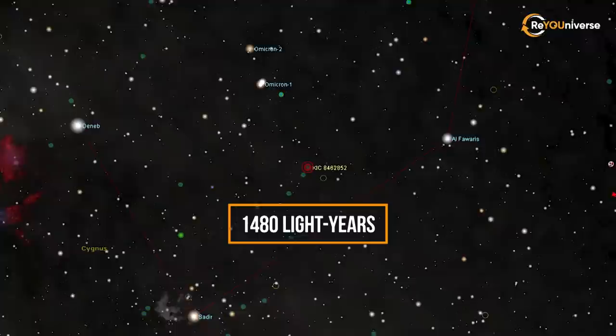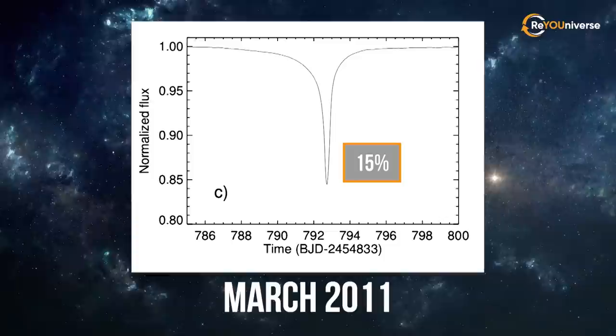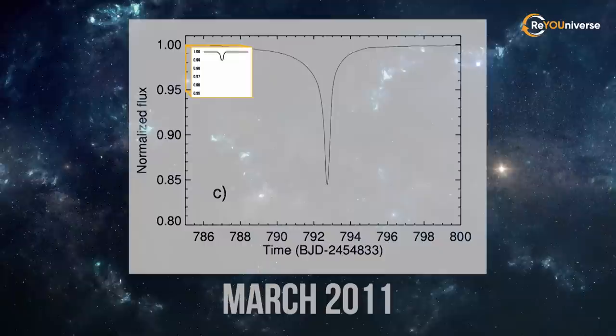In March 2011, the star's luminosity dropped by as much as 15%. Just remember that even the largest planets cause a 1% drop in the star's luminosity.